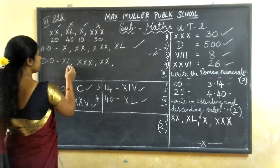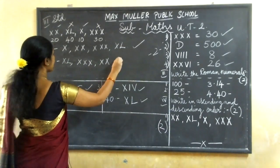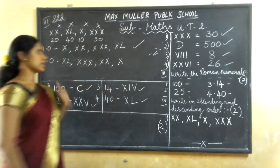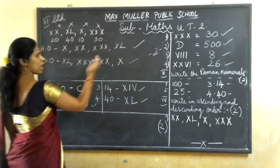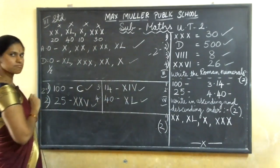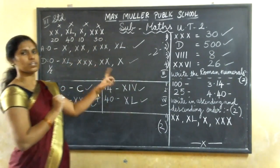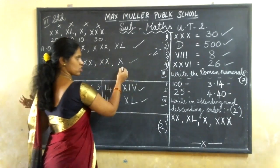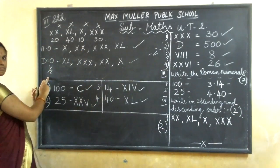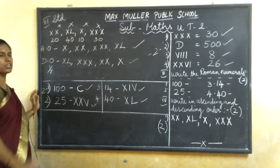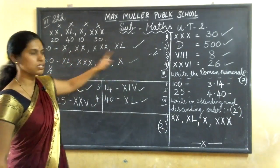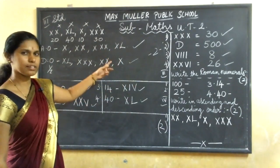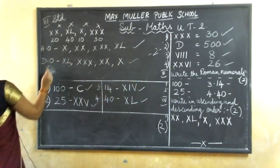XL is 40, XXX is 30, XX is 20, and the last is X for 10. Understood, all of you? If your answer is correct, put a tick mark. Half correct and half wrong means half marks. Ascending order: smaller to bigger. Descending order: bigger to smaller. If it is correct, give two marks. Understood — how much marks? Two marks.